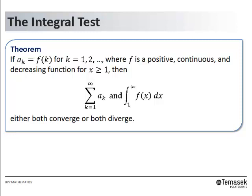The technique we just used to show that the harmonic series is divergent is called the integral test. Here is the theorem: if a_k, the term of the series, equals f(k), the value of a function f for every integer k, where f is a positive, continuous, and decreasing function for x greater than or equal to 1, then if we compare the infinite series and the improper integral, either both converge or both diverge.